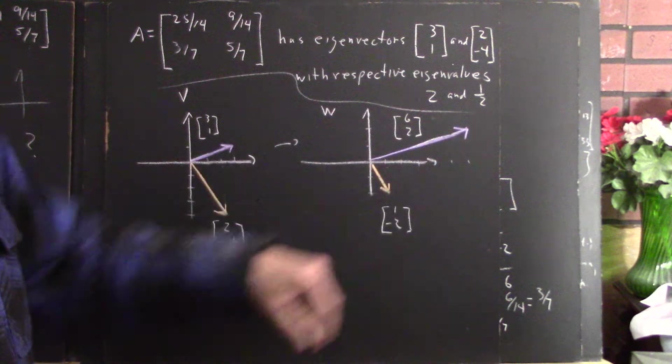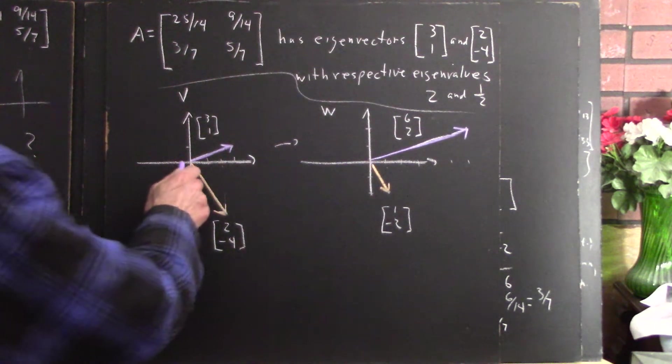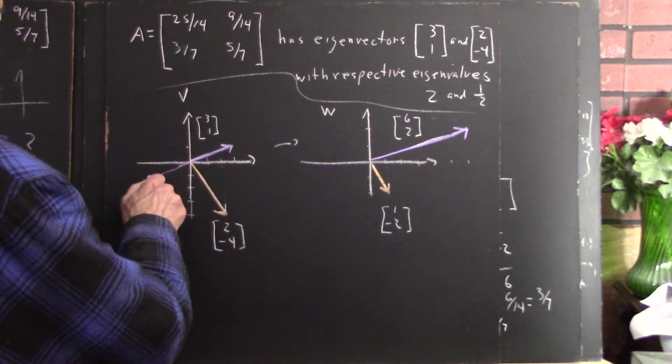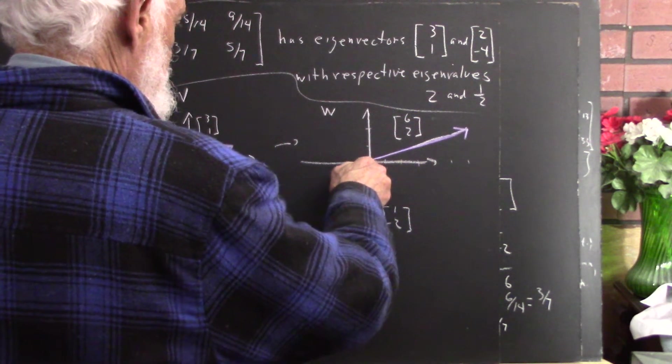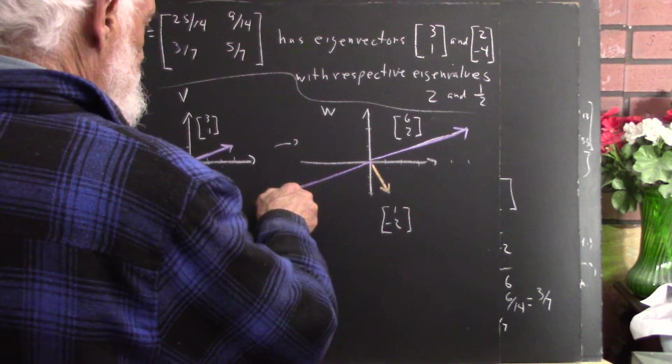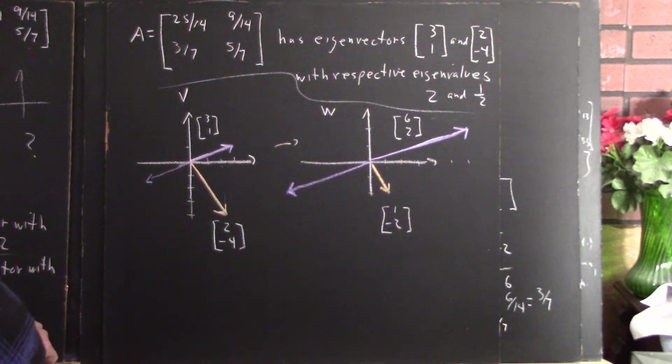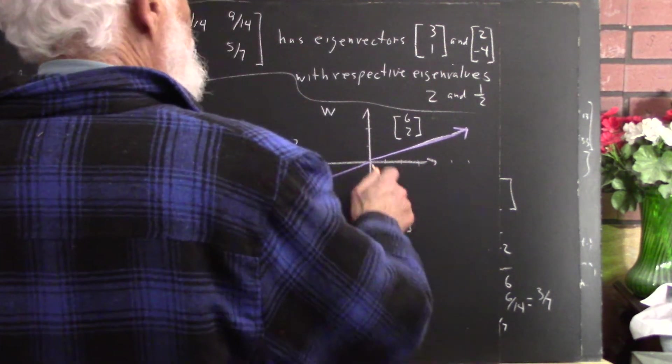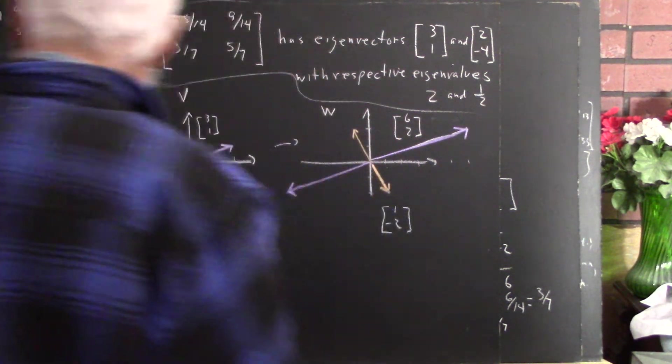So this is what the transformation does. Now there's more information. Since this is a linear transformation, it will also take the vector negative 3, negative 1, the vector equal and opposite to this one, to the vector negative 6, negative 2. Maybe I did that about right. It doesn't look great, but you get the idea. And it will take the vector 1, negative 2 to the vector negative 1, 2. That one looks a little better, but it doesn't look great either.